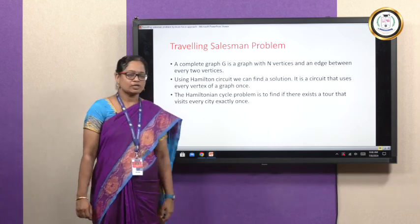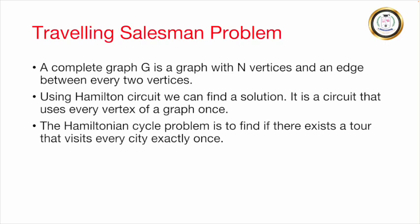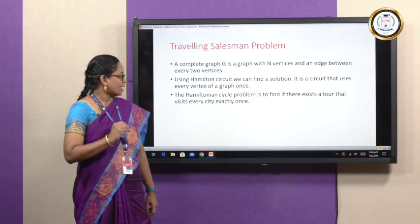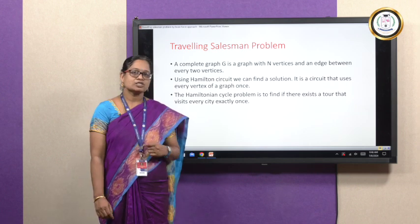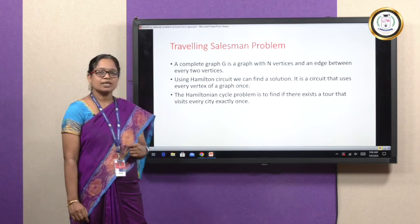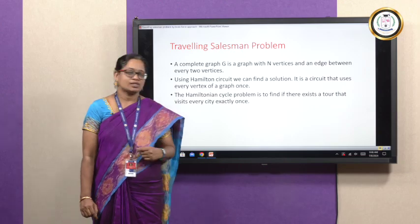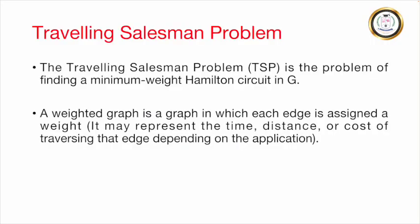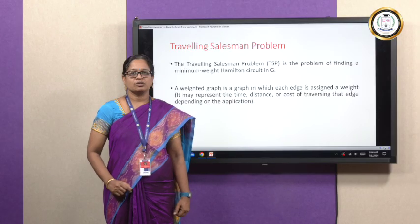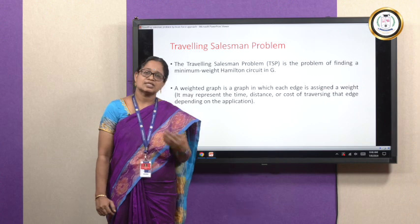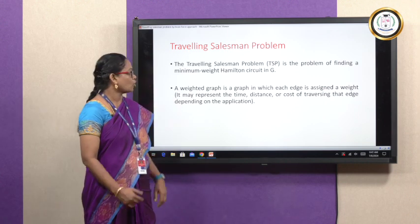A Hamiltonian circuit is a circuit that uses every vertex of a graph only once. The Hamiltonian cycle problem is to find a tour that visits every city exactly once. A weighted graph is a graph in which each edge is assigned a weight. This weight may be time, cost, or distance, depending on the application.